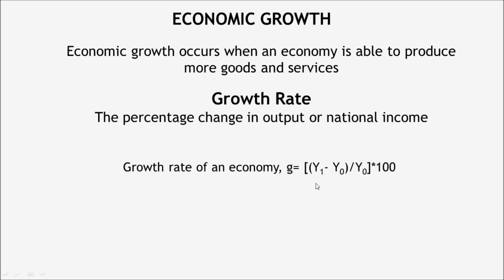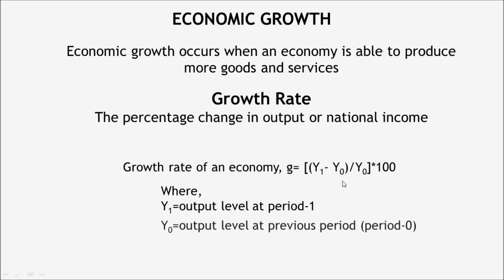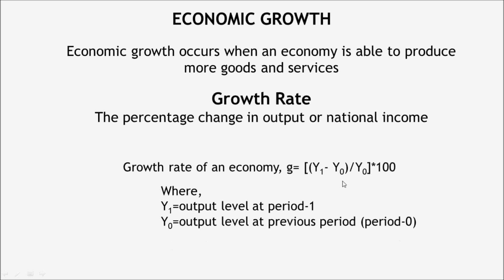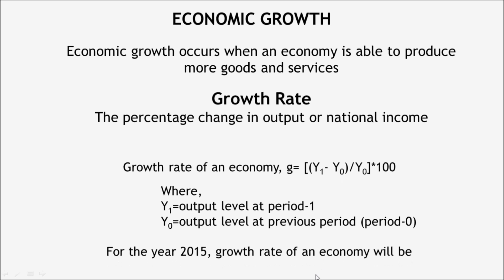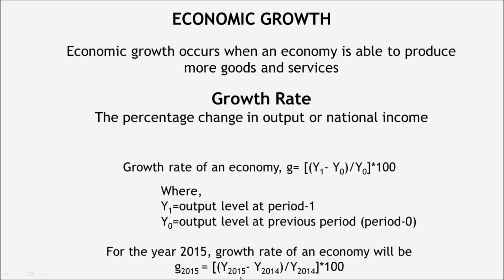Here, y1 is the output level of period one and y0 is the output level of the previous period. For example, for the year 2015, the growth rate of an economy will be: g(2015) equals output level of 2015 minus output level of 2014, divided by the output level of 2014, then multiplied by 100 to get the growth rate of 2015.